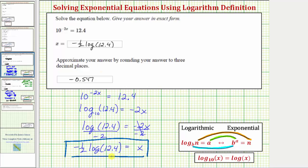Let's verify that our solution does satisfy the equation. So beginning with the original exponential equation, let's substitute the exact value for x into the equation, which would give us 10 raised to the power of negative 2 times negative one half times the common log of 12.4 equals 12.4.